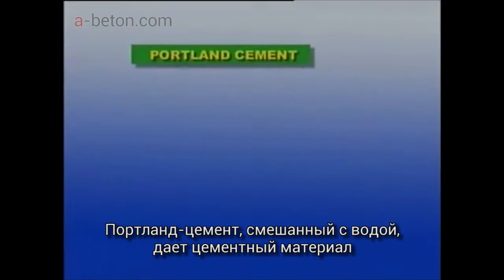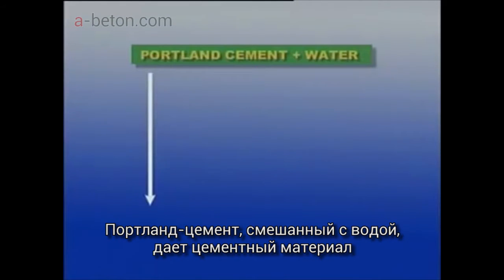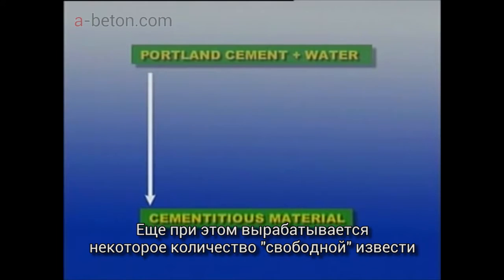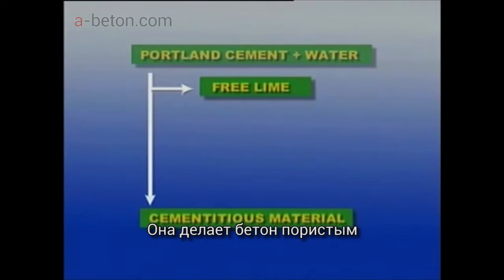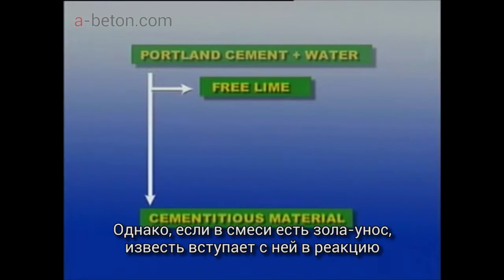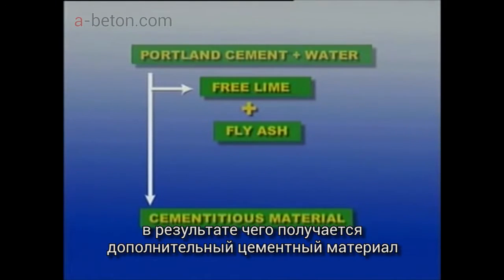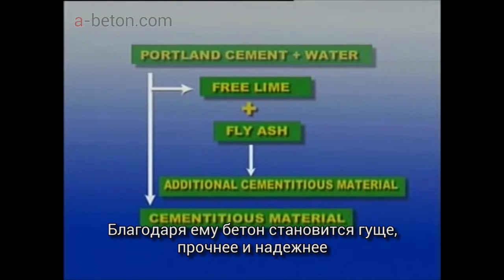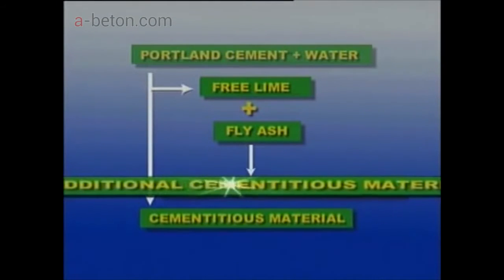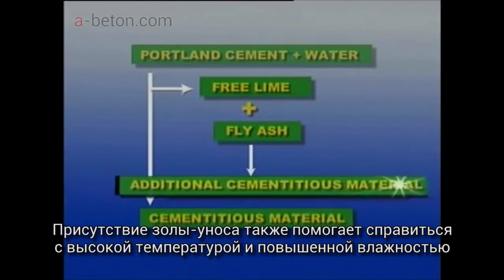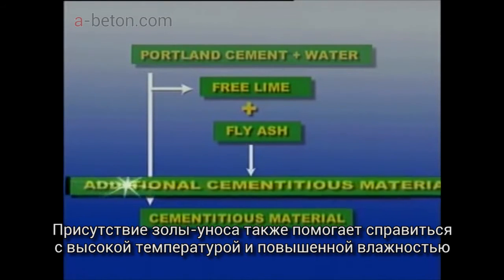Portland cement, when mixed with water, produces cementitious material. In this process, some free lime is also liberated. This free lime is the cause of porosity in the concrete. However, if fly ash is present in the mix, the free lime reacts with fly ash to produce additional cementitious material, which produces additional strength and makes the concrete denser, thus increasing its durability. The presence of fly ash also helps in reducing the heat of hydration.